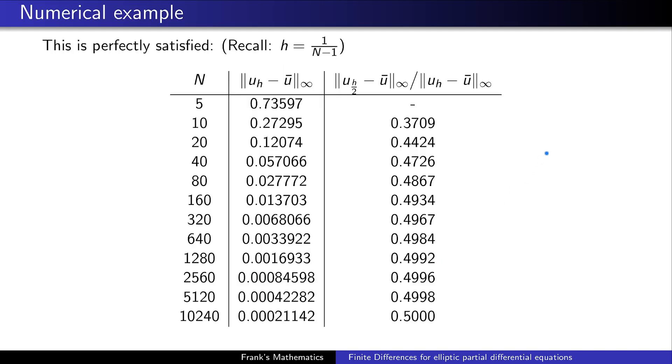And this is very perfectly satisfied. You can see the values here. In the first column of the table, you have n doubled each row. So this roughly means that h in every line will be divided by two. Here you have the values of the L∞ error norm. And here you have the fraction. And this fraction should converge to one over two, so to one half. This is very perfectly satisfied. So our theory, although I did not prove it, seems to be correct. And this is supported by our numerical experiments.